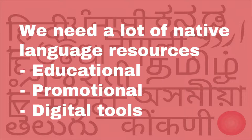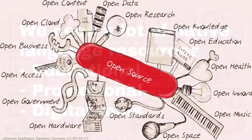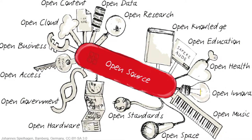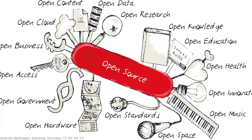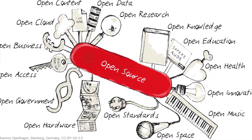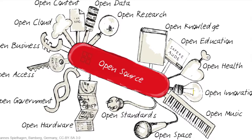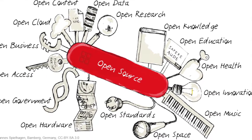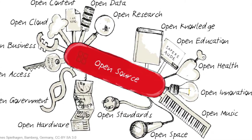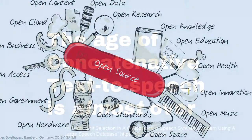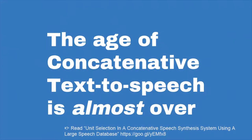When we see that the government isn't doing much, maybe open source is the hope because it's open, it's collaborative, and a lot of people can take part. When we talk about open source tools and especially text-to-speech tools, there used to be something called concatenative text-to-speech.